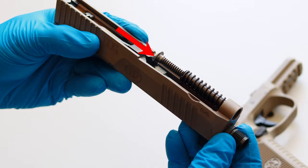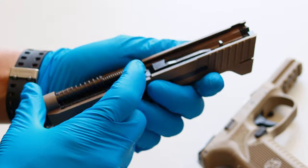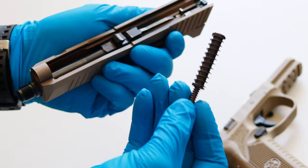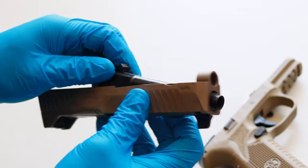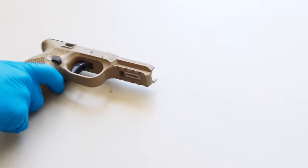Now remove the recoil spring by compressing it from chamber end to muzzle end. Now just push the barrel up and grab it by the lug and pull it right out. And now you're field stripped.